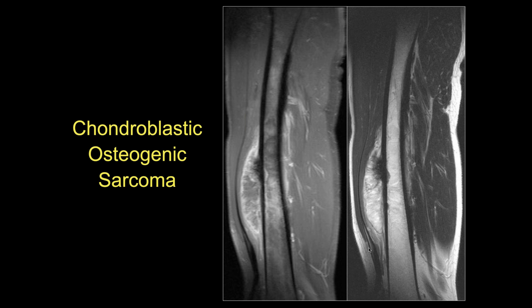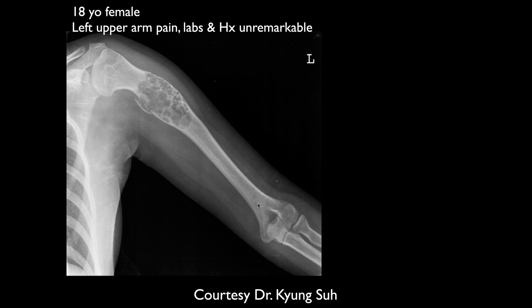A little bit unusual in that this is primarily involving the periosteum. This was a chondroblastic osteogenic sarcoma, and there is certainly some abnormality within the marrow space. But most bone tumors will primarily affect the medullary space and extend out and blow through the cortex. So this is a little bit unusual — a chondroblastic osteogenic sarcoma. But you described it really as a malignant lesion, and so it really has to be worked up as such.